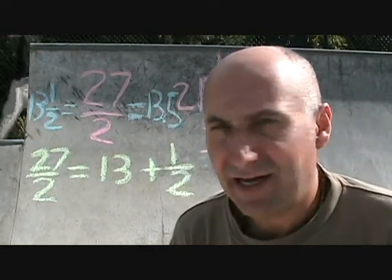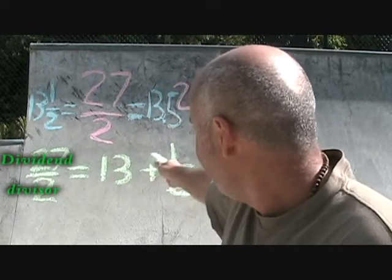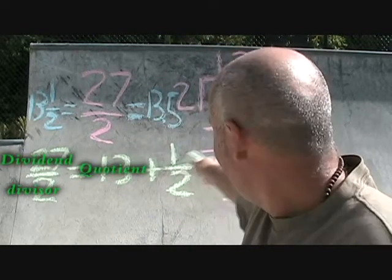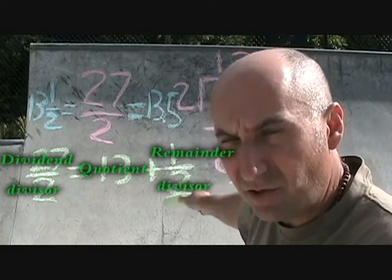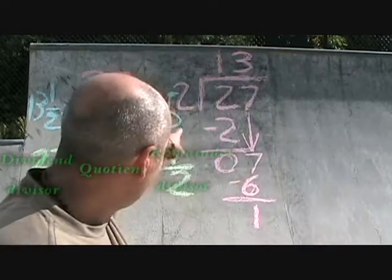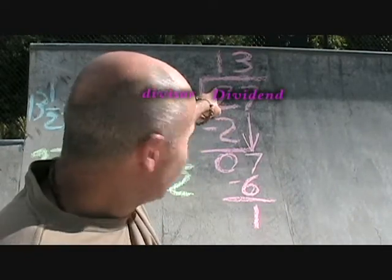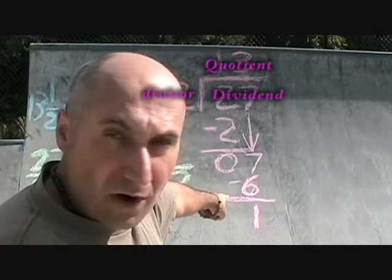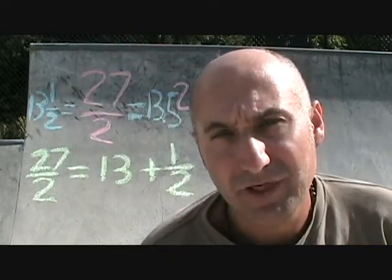Now, terminology-wise, in mathematics, this guy's called a dividend, that guy's called a divisor, this guy's called a quotient, and 1 is called a remainder, and again, that guy's called a divisor. So what you have over here is 27 is your dividend, 2 is your divisor, 13 is your quotient, 1 is your remainder. And this is the terminology that we want to get out of here.